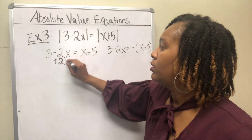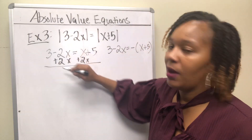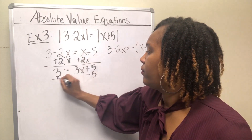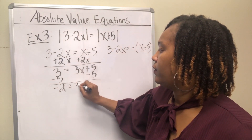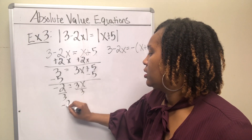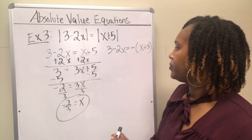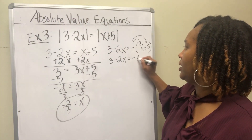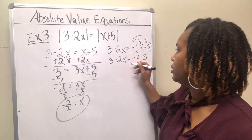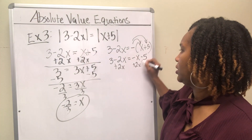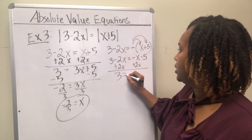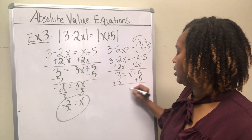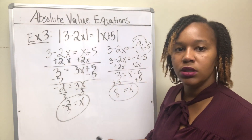Solve each equation. Take 3 minus 2x and set it equal to x plus 5, and also set it equal to negative (x plus 5). For the first equation, moving the 2x over gives 3 equals 3x plus 5; subtracting 5 gives negative 2 equals 3x, so x equals negative 2 thirds. For the second, distribute the negative: 3 minus 2x equals negative x minus 5. Moving terms over gives 3 equals x minus 5; adding 5 gives x equals 8. So the two solutions are negative 2 thirds and 8.